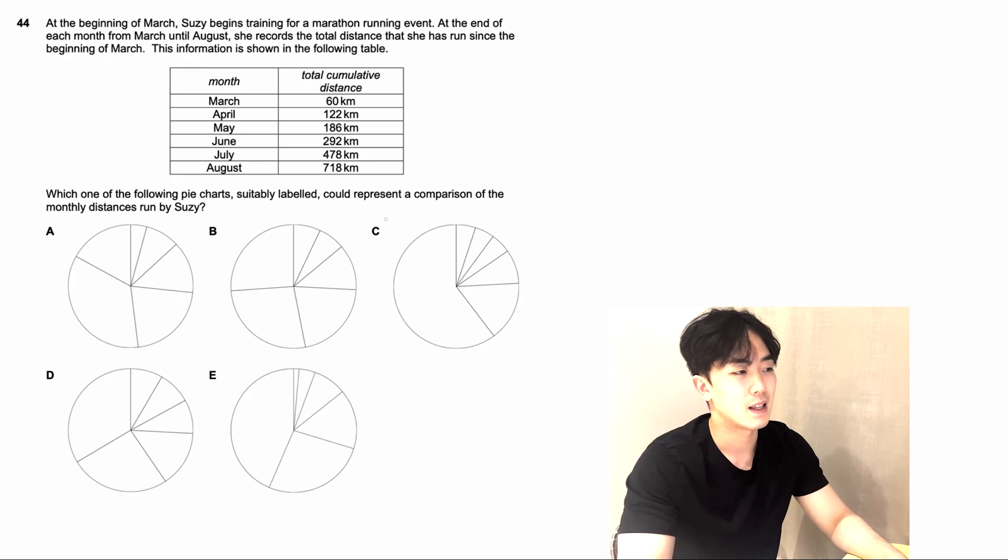Question number 44. We got a series of pie charts and a table. At the beginning of March, Susie begins training for a marathon running event. At the end of each month from March to August, she records the total distance that she has run since the beginning of March. That's what it means by cumulative. Cumulative means added up by the sum of all the values before. Which one of the following pie charts could represent the comparison of the monthly distances run by Susie? The pie chart is showing the monthly distance. We need to identify the distance she runs in each month.